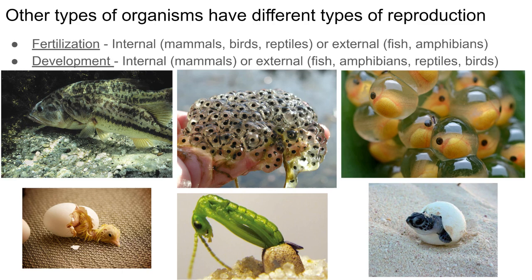Amphibians have external fertilization — they lay eggs in the water and release sperm in the water. Insects often also have external fertilization. Mammals, birds, and reptiles have internal fertilization — the male deposits sperm cells into the female reproductive tract, which fertilize the egg. The next question is: where do those fertilized eggs actually grow and develop? In mammals, embryos develop inside the female's body.